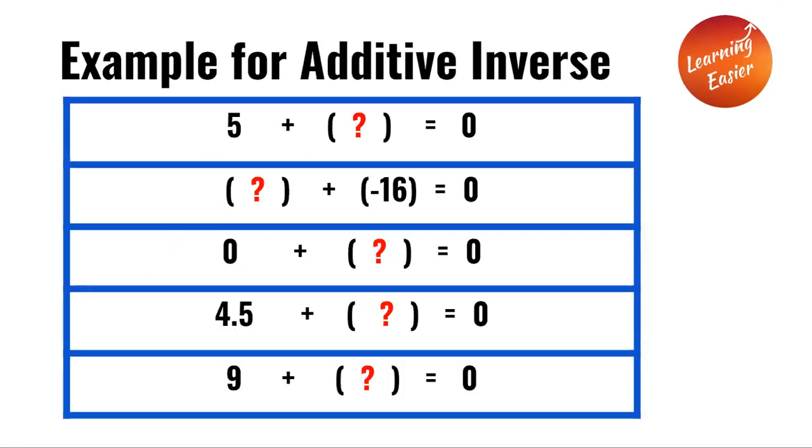Example for additive inverse: 5 plus a number equals zero. The number has to be 5's additive inverse, which is negative 5. So the answer for that question is negative 5.